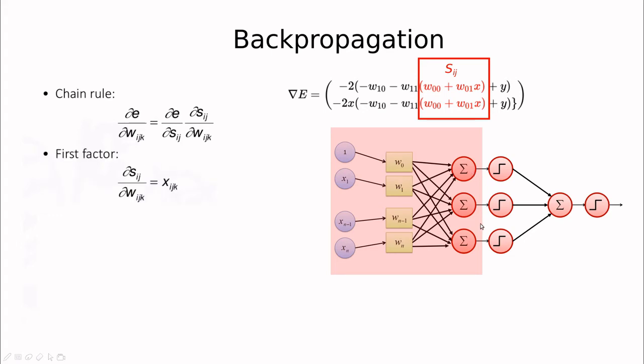In the first layer, in this case this is a multi-layer perceptron, but with just one hidden layer, in the first layer this partial derivative is simply the input. Because if you remember, we are multiplying each weight times x, and this is a constant. So actually what we are applying here is the numbers that we are using in our dataset.